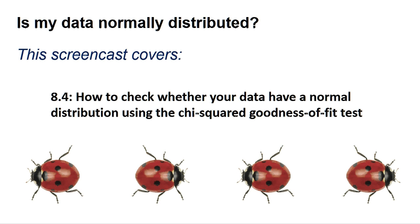If your data is normally distributed, then you can use a set of tests called parametric tests that are more powerful in discriminating significant from non-significant results. This is because the equation expects your data to conform to a pattern called the Gaussian or normal distribution and so can make more accurate predictions.